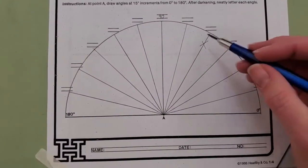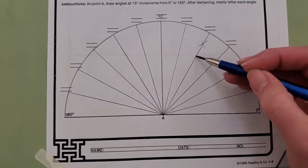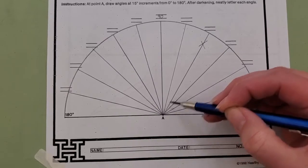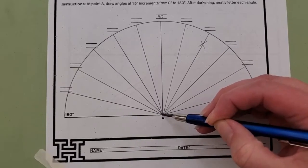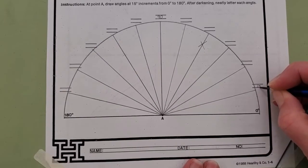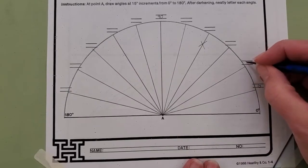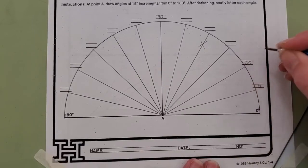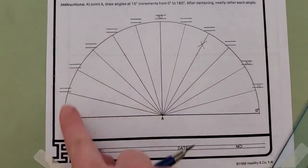So like I said, I'm going to go back and erase this line right here and try it again so that the line is starting at the very center of point A. And then I'm very nicely, neatly going to number it from zero degrees all the way over to 180.